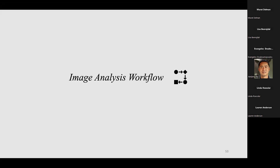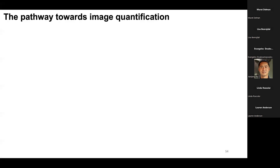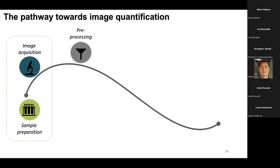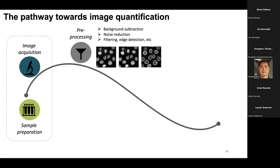We saw many different filters - let's talk about the image analysis workflow. There is a pathway going from sample preparation to image acquisition, which was covered in previous classes. You have to ensure quality there to make image analysis easier. One of the first steps is pre-processing: do you need to reduce noise? Do you need to perform background subtraction? Do you need to filter? These are things you can do to enhance the image.